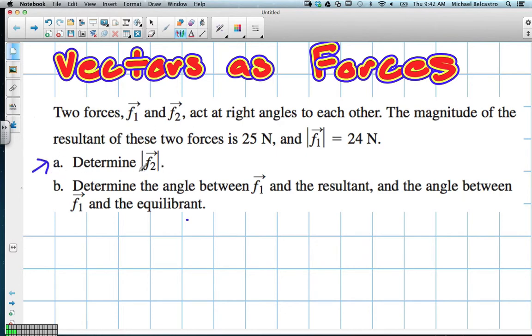First part says determine the magnitude of F2. Let's read this question. There are two forces, force 1 and 2, and they act as right angles to each other, which means 90 degrees. The magnitude of the resultant of these two forces is 25 newtons, and the magnitude of force 1 is 24 newtons.